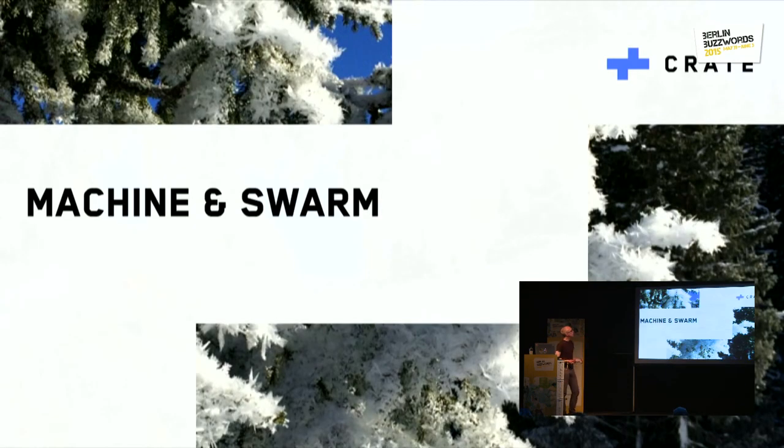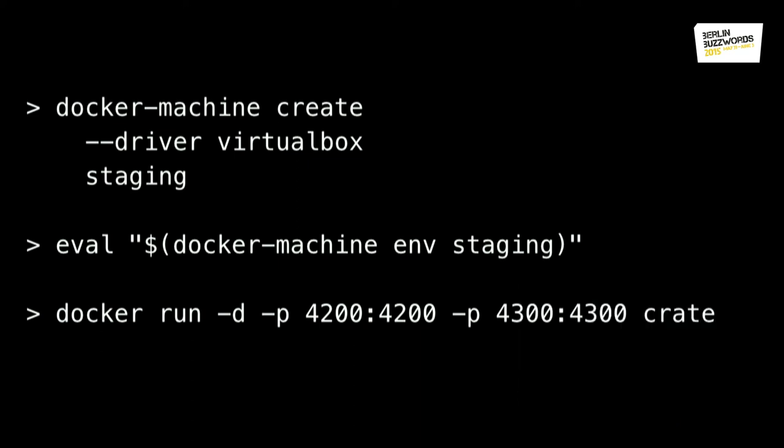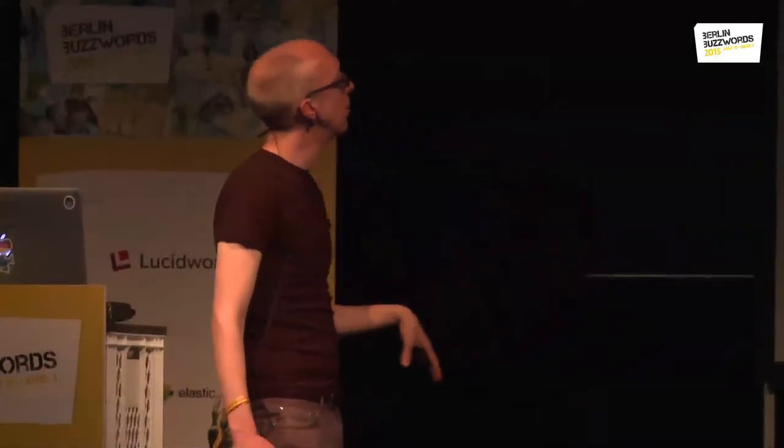Docker Machine is a tool for creating virtual machines very easily, with various drivers such as VirtualBox, AWS, and DigitalOcean. Docker Swarm is a way of creating multiple Docker machines and grouping them together. This is where we want to go — creating a fully distributed database where everything is aware of each other and when we remove and add instances, the data is synchronized.